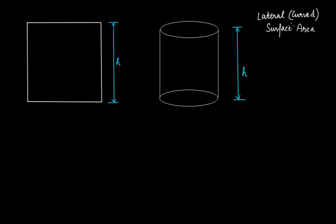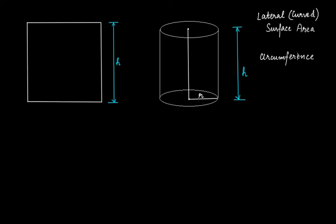If this was your cylinder, we can easily measure its radius. Imagine that the center was here, and you calculate its radius. Let's say the radius of this cylindrical can or box is r. If this is r, then what will be the circumference of this circular base? The circumference of the circular base will be equal to 2πr. That is the formula — we know the circumference of a circle is given by 2πr, where r is the radius of the circle.